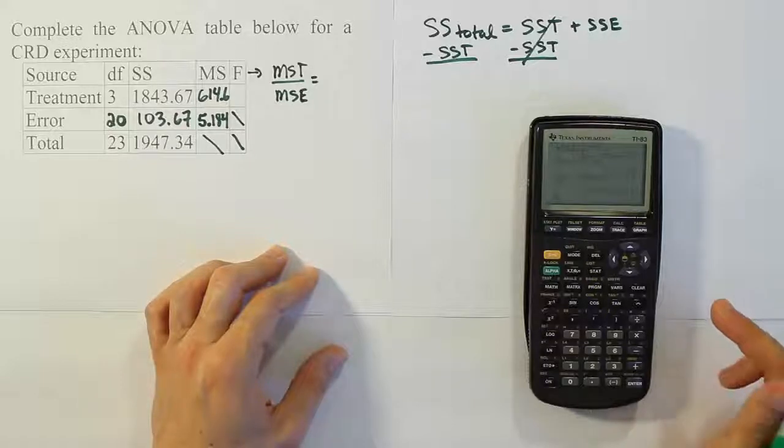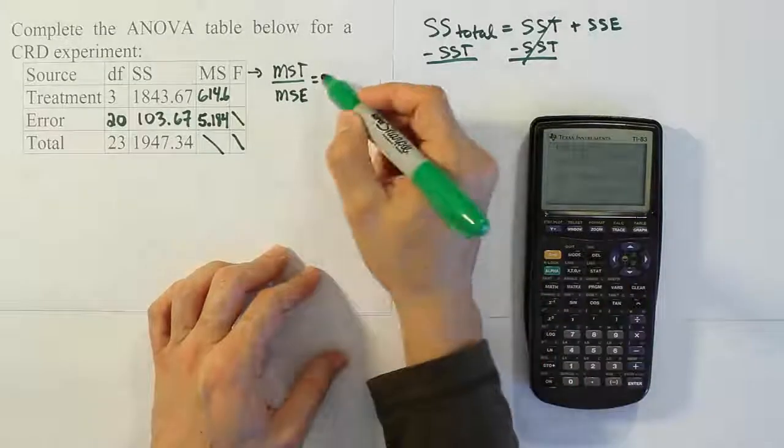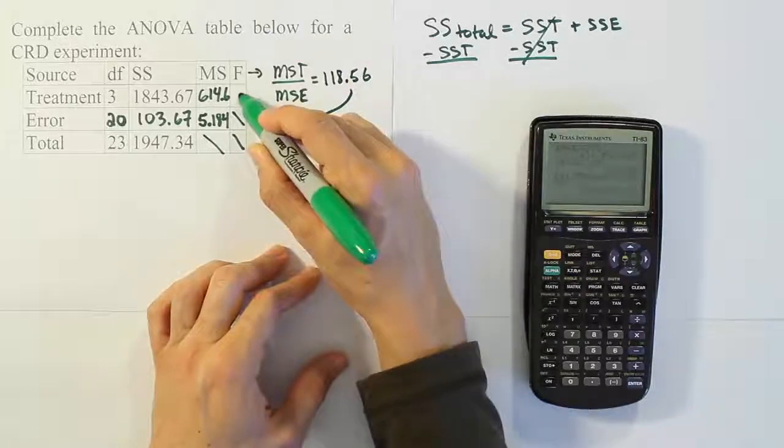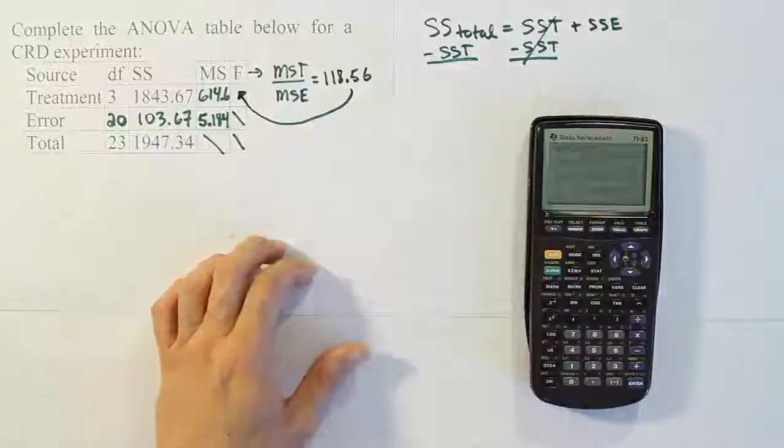And when we do that, we get 118.56. 118.56. And that, of course, would be our test statistic, F, for this ANOVA table.